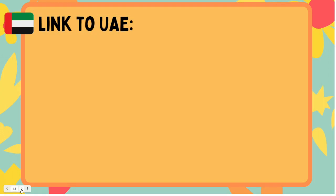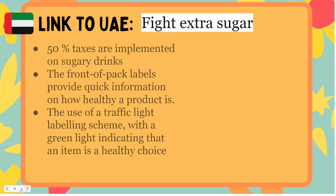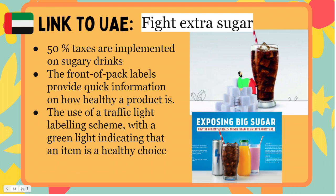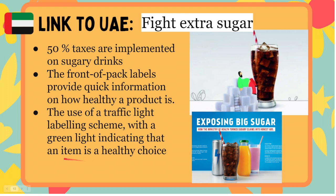The UAE has implemented taxes on sugary drinks and a decrease in sugar within other foods to help people consume healthier foods. The use of front-of-pack labels provides quick information on how healthy a product is, and a traffic light labeling scheme — with a green light indicating that an item is a healthy choice — has been implemented to fight obesity. We actually learned about this in our week one keeping healthy lesson.